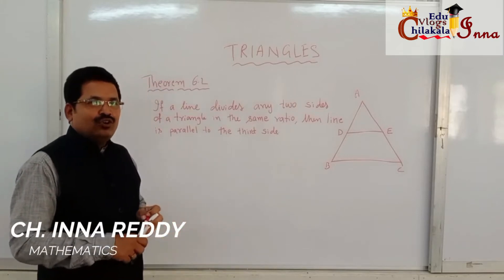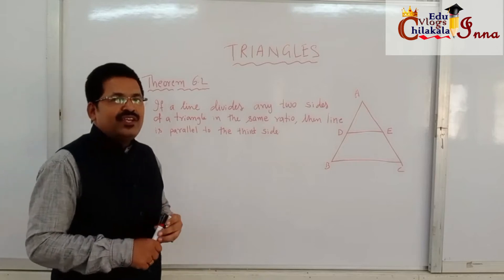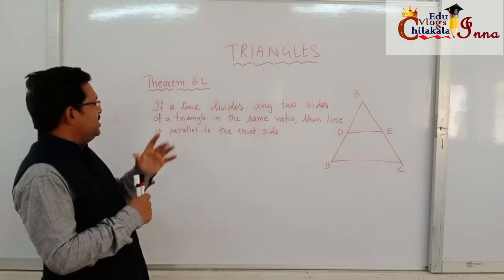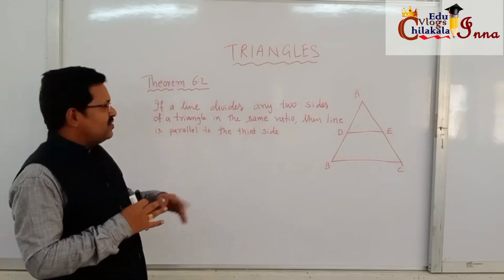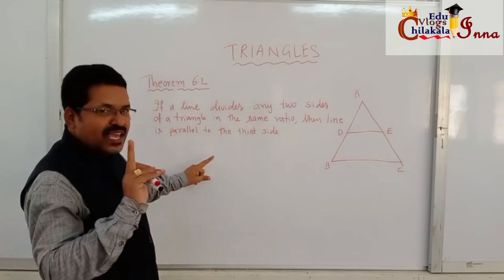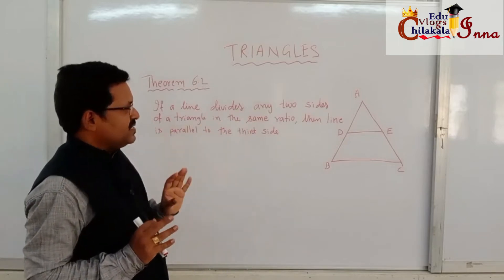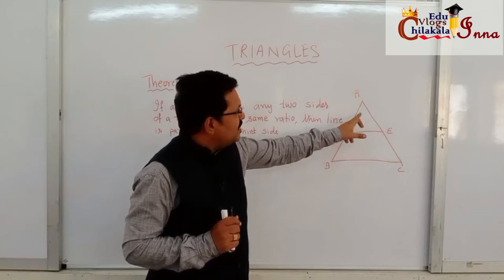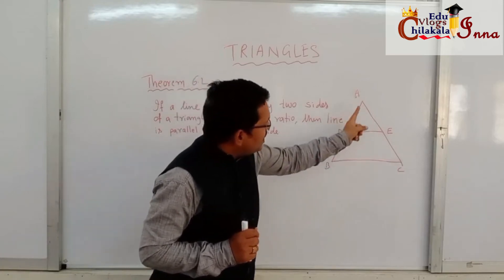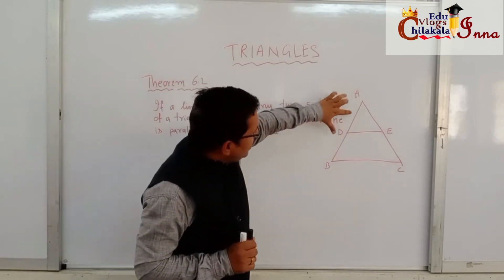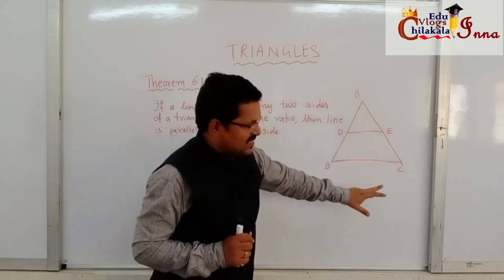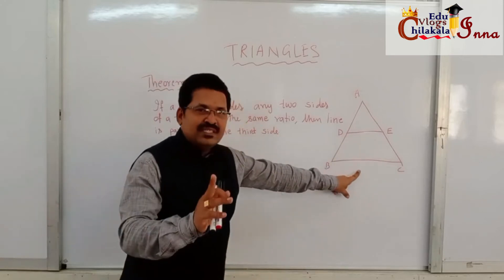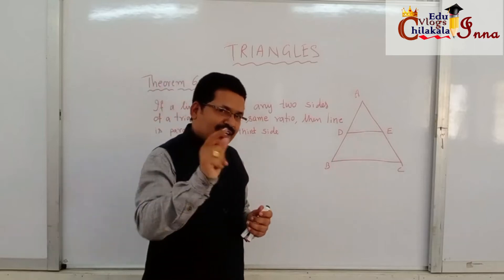Hi folks, hope you are all doing well. Now I'm going to explain Theorem 6.2 in the chapter Triangles. The theorem states: if a line divides two sides of a triangle in the same ratio, the line is parallel to the third side. In triangle ABC, line DE divides sides AB and AC with the same ratio — that means AD/DB = AE/EC is given. We need to prove that DE is parallel to BC.